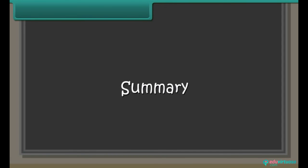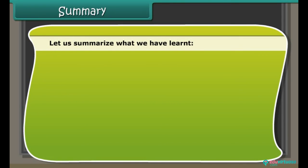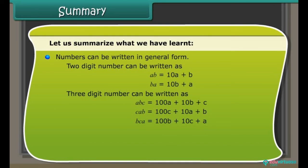Summary. Numbers can be written in general form. A two-digit number AB = 10A + B, and its reverse BA = 10B + A. A three-digit number ABC = 100A + 10B + C.